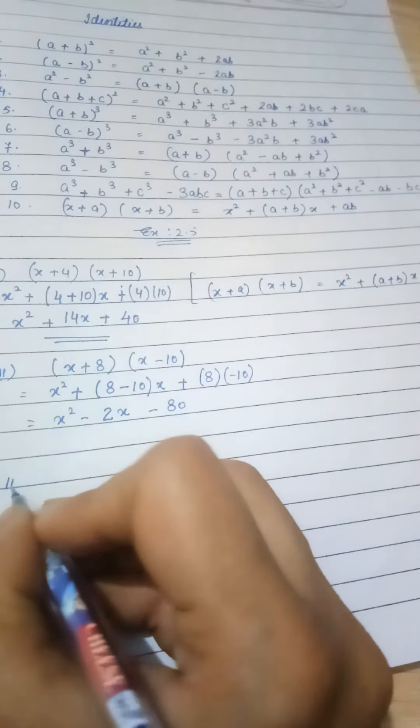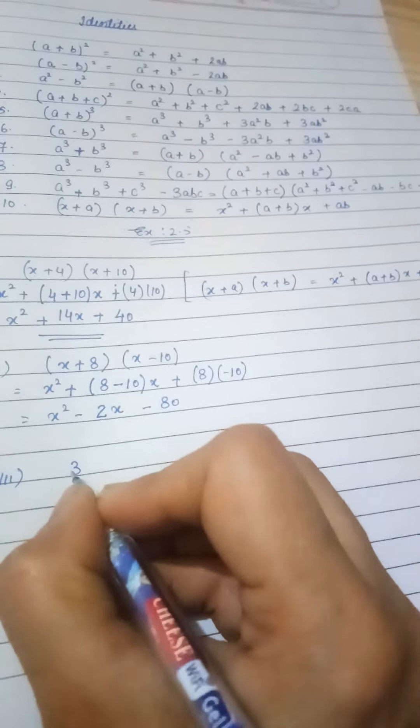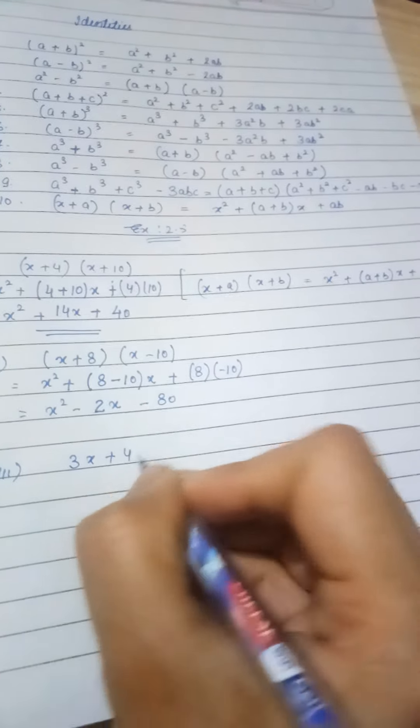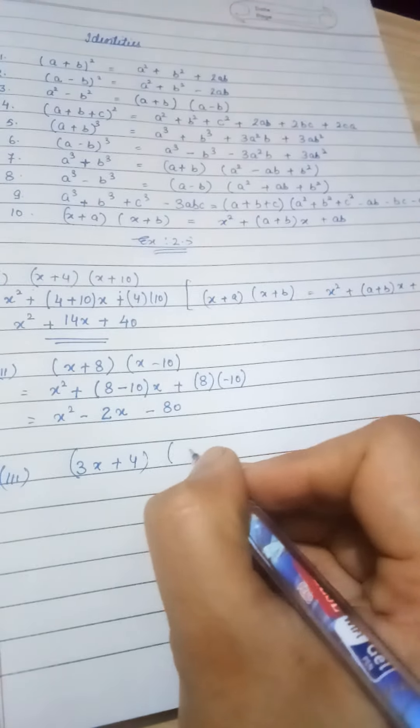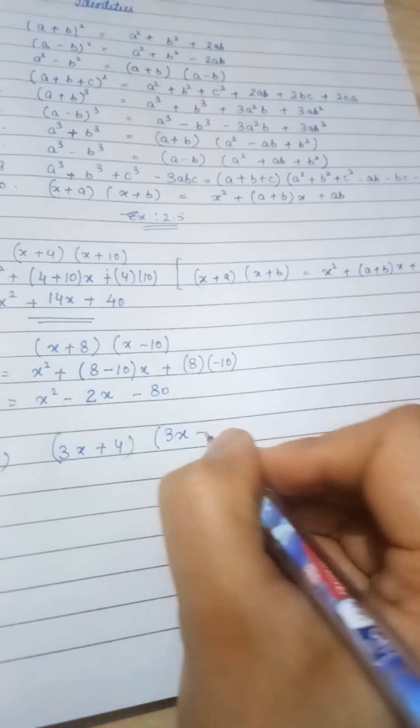Then we have x squared minus 2x minus 80.